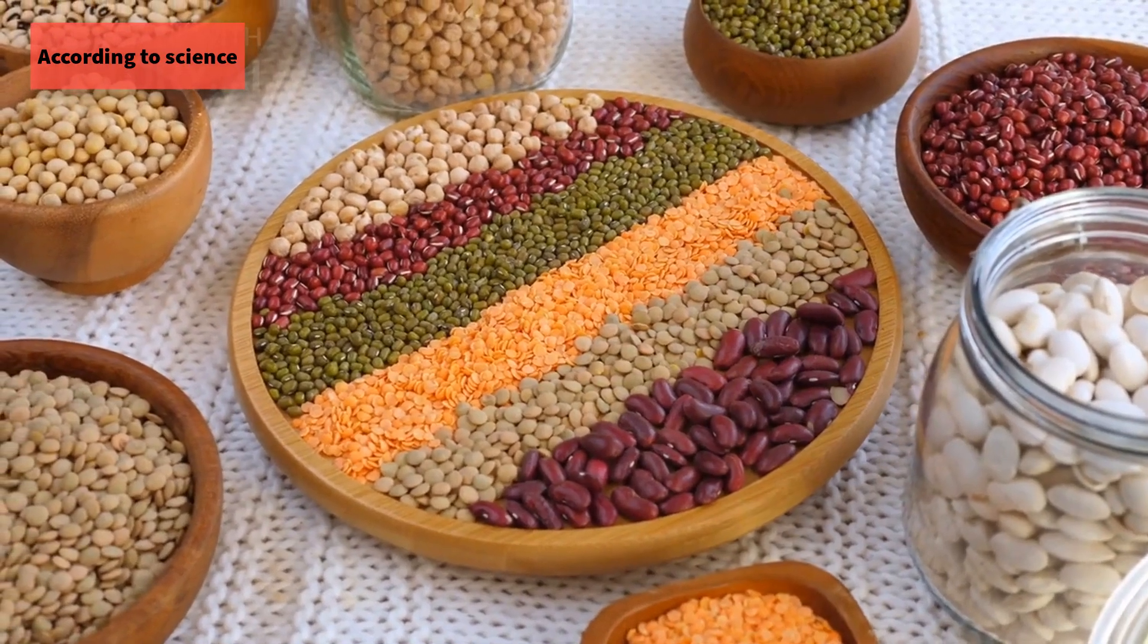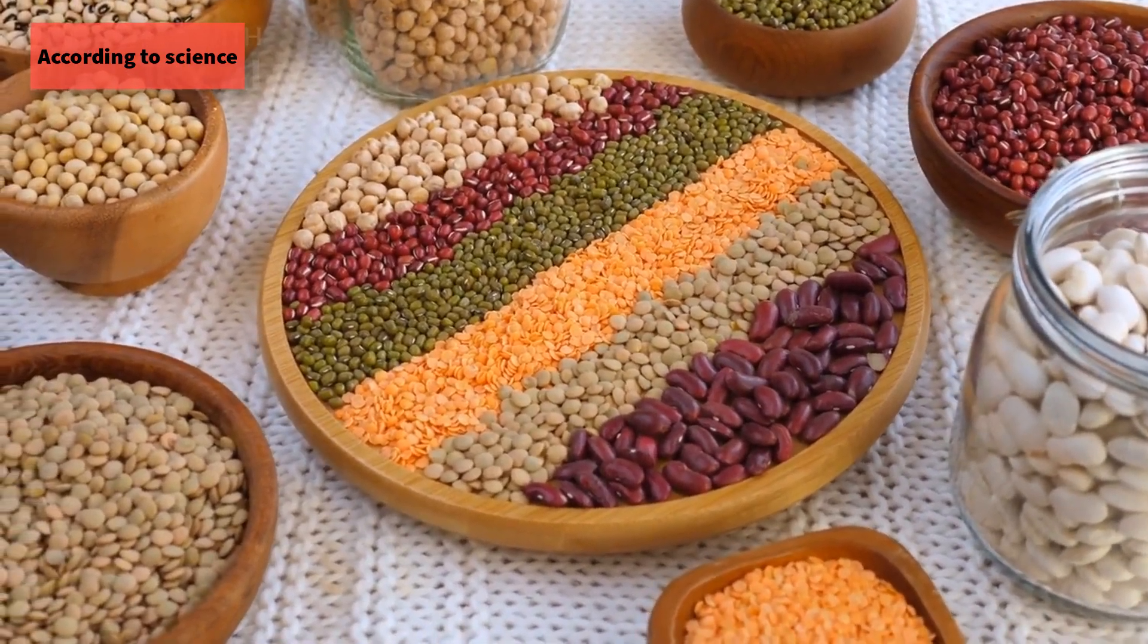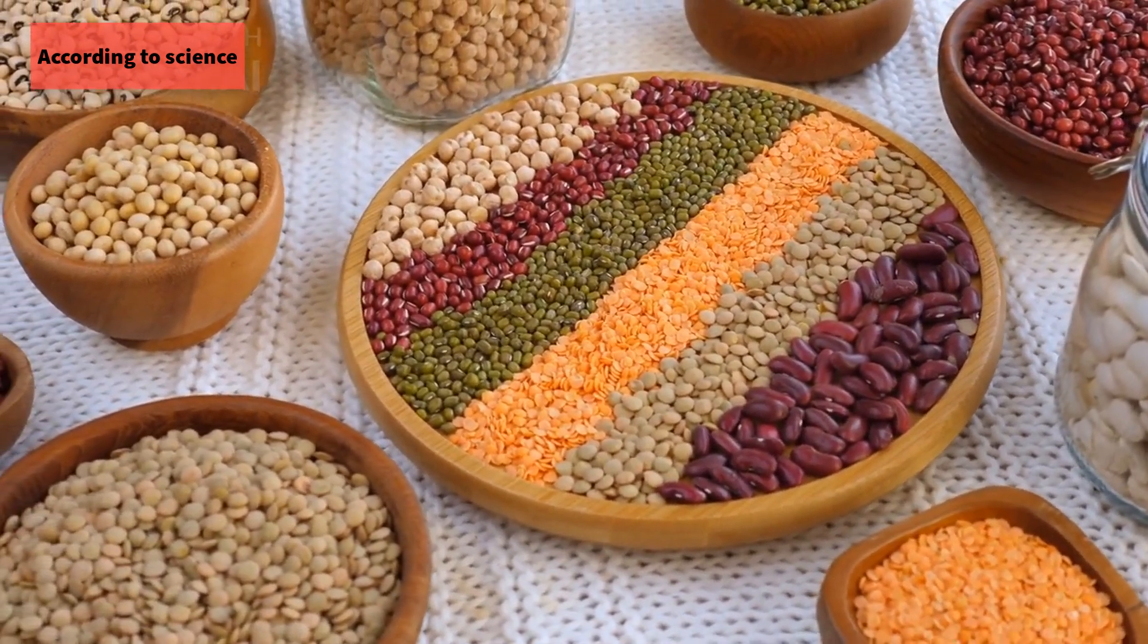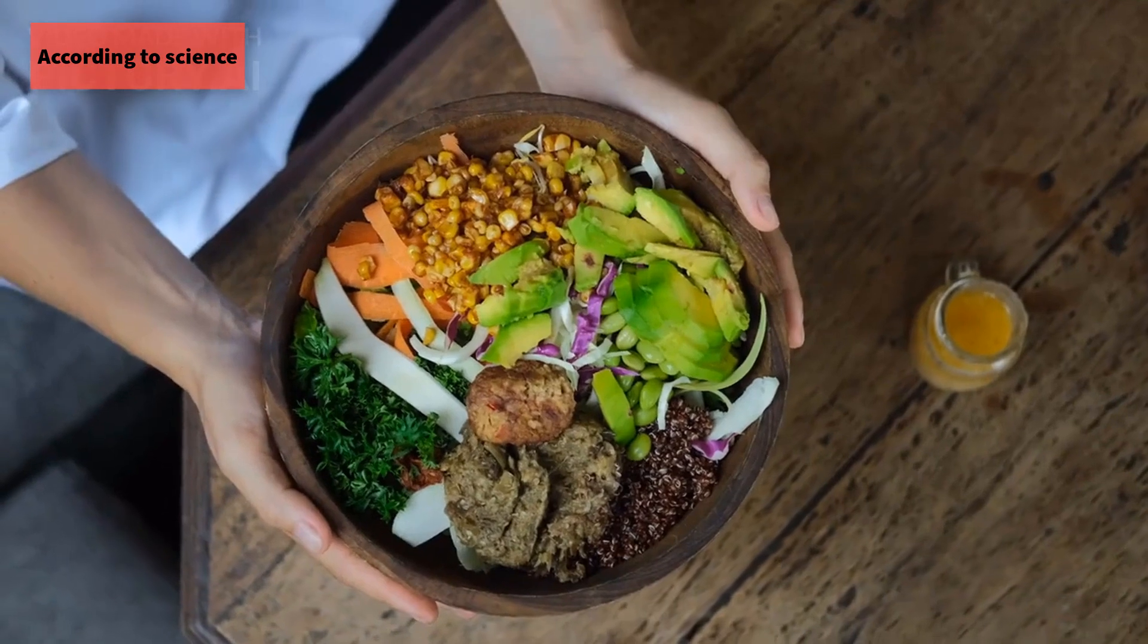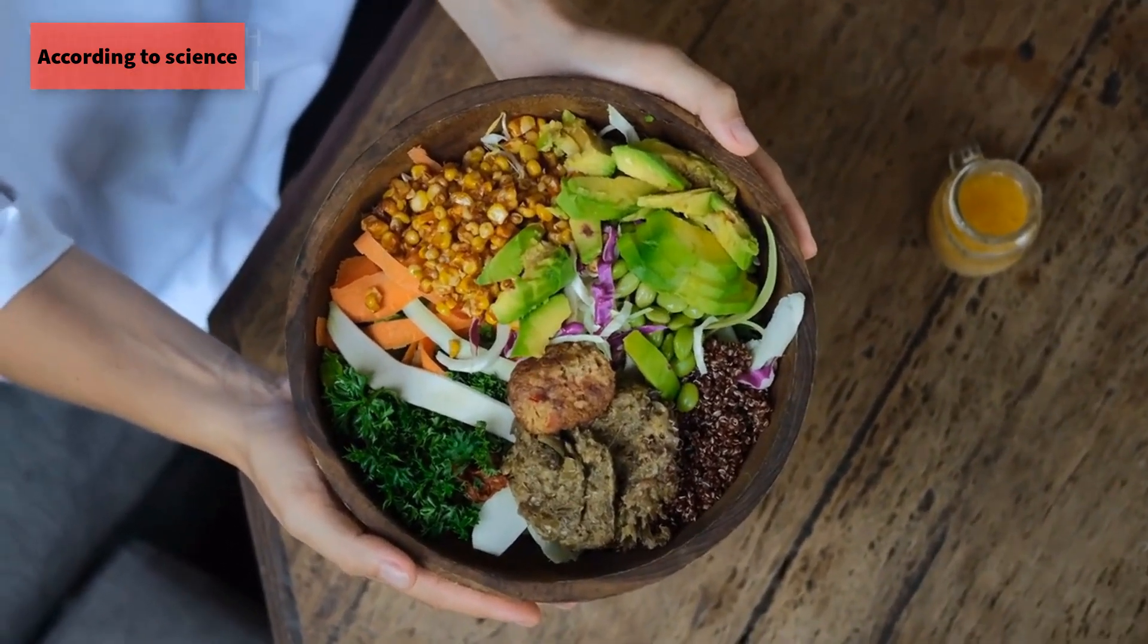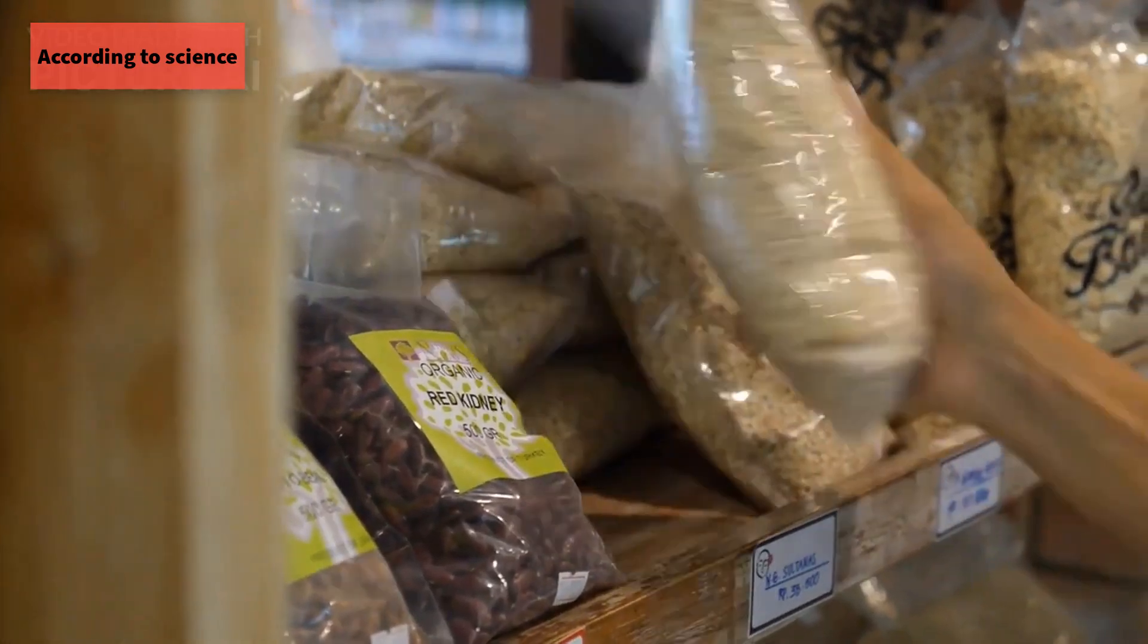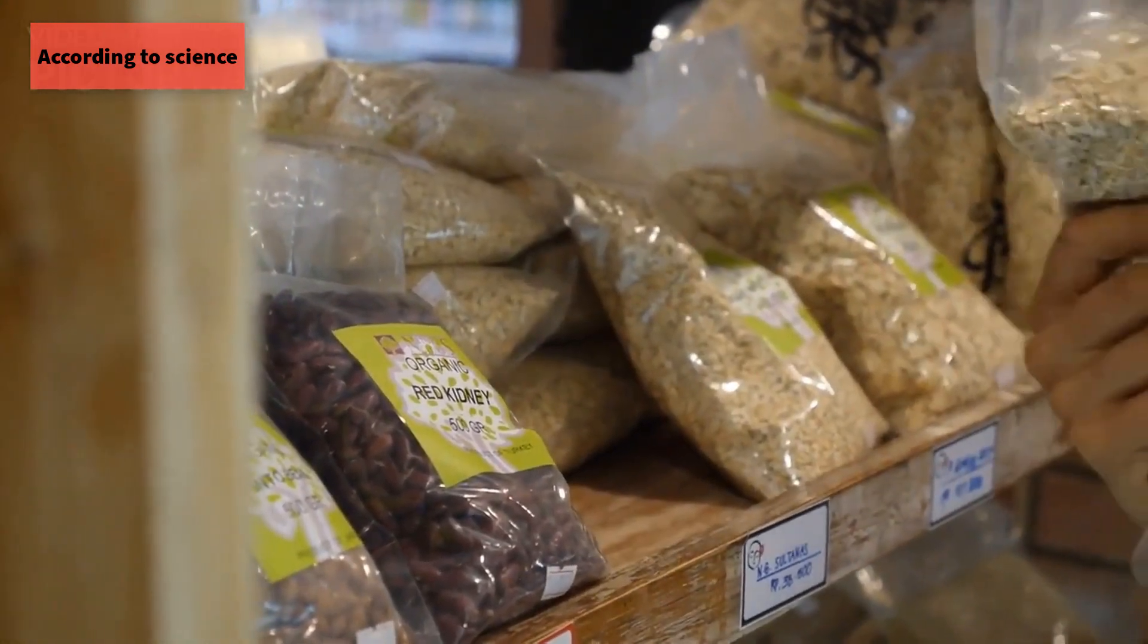Beef, poultry, fish, eggs, dairy, soy, quinoa, and buckwheat are examples of these foods. Incomplete proteins are foods that contain some but not all of the essential amino acids. Nuts, seeds, beans, and some grains are examples of these foods.